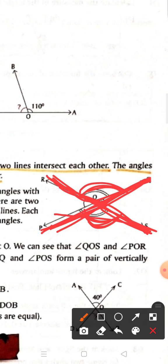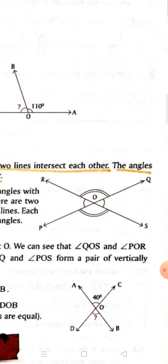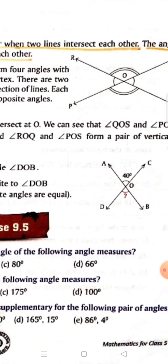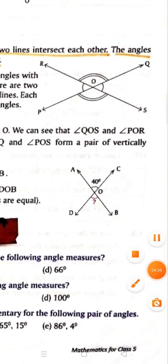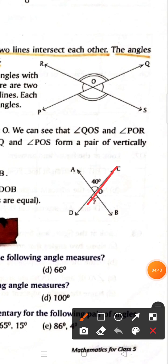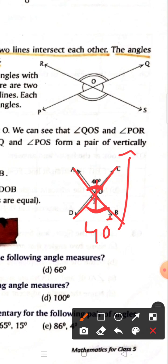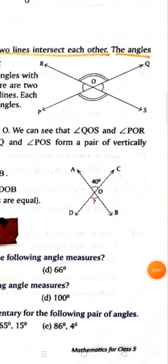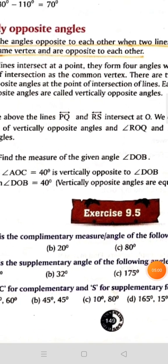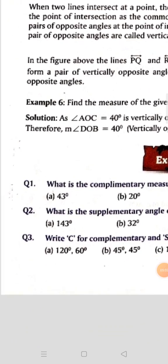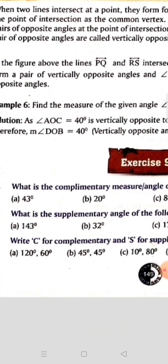Here is an example. Two lines intersect and one angle's measure is given. Its opposite angle has the same measurement — 40 degrees — because it is a vertically opposite angle. Now let's move to Exercise 9.5, question number one: what is the complementary angle measure of the following angles?